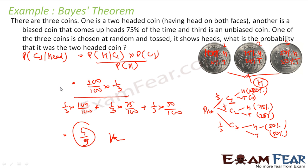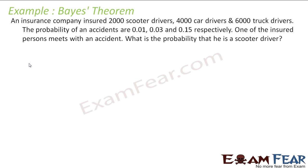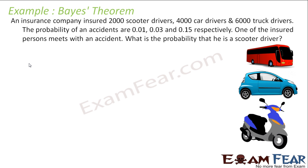Easy question or a difficult one — you just apply Bayes theorem, put the values and get the answer. An insurance company insured 2,000 scooter drivers, 4,000 car drivers, and 6,000 truck drivers. The probability of accidents are: scooter 0.01, car 0.03, truck 0.15.